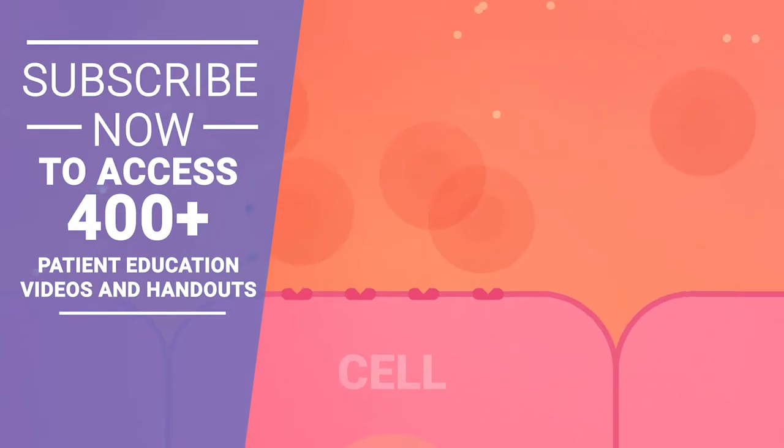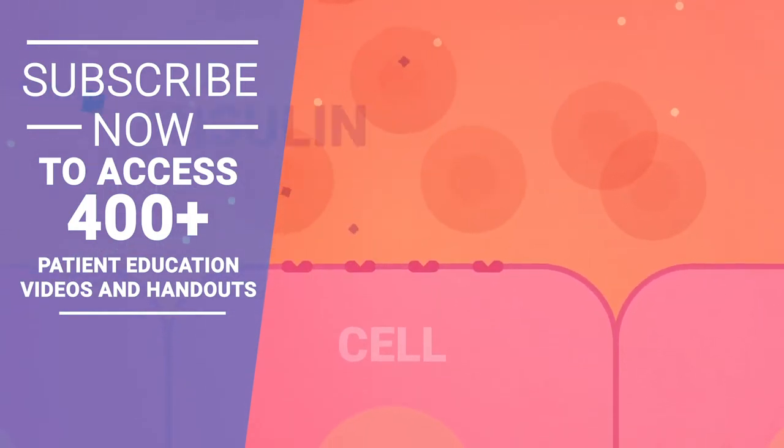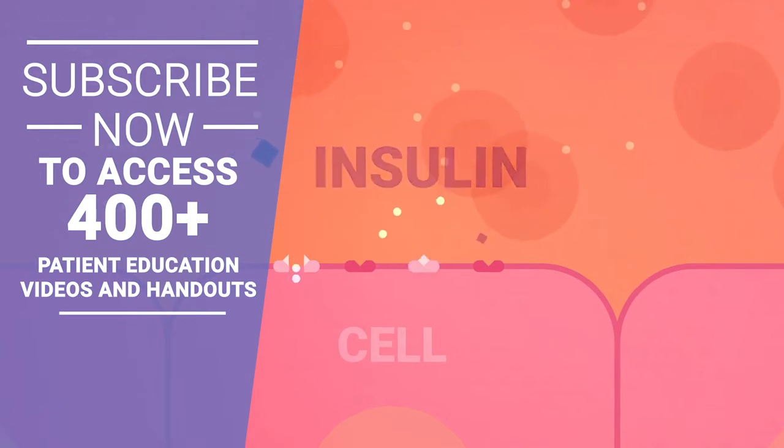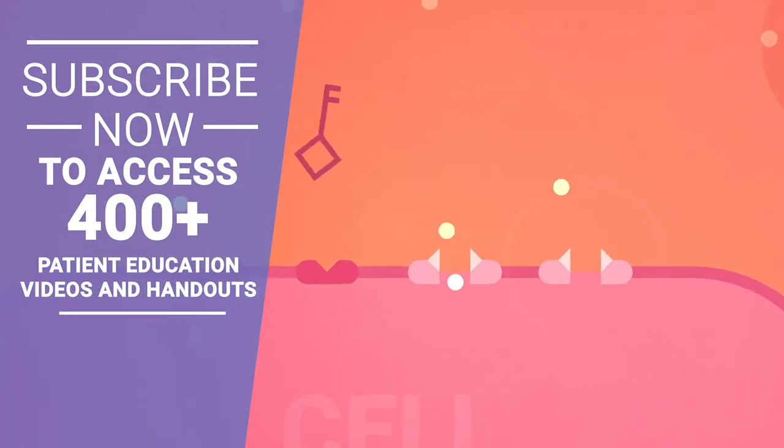In order for your cells to use the glucose as fuel, it needs the help of insulin. Insulin is a hormone produced by your pancreas that acts like a key to help the glucose move out of your blood and into your cells, where it is burned for energy.